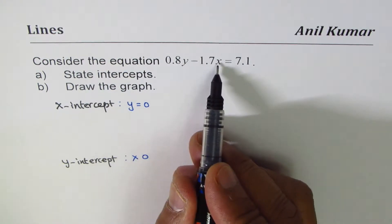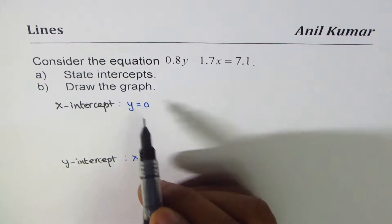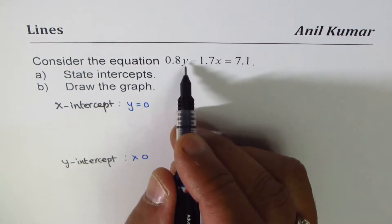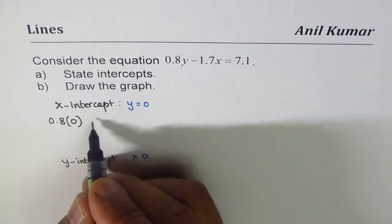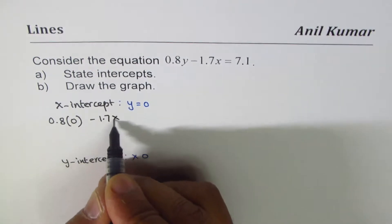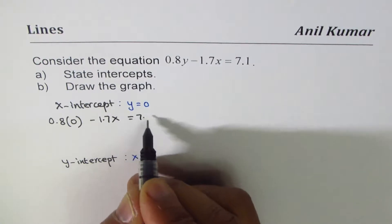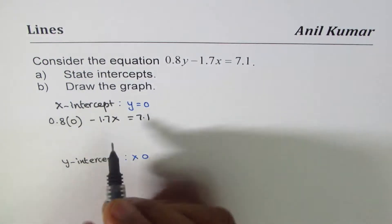The equation is 0.8y minus 1.7x equals 7.1. We get 0.8 times 0 minus 1.7x equals 7.1. Now this part is 0, so x equals negative 7.1 divided by negative 1.7.